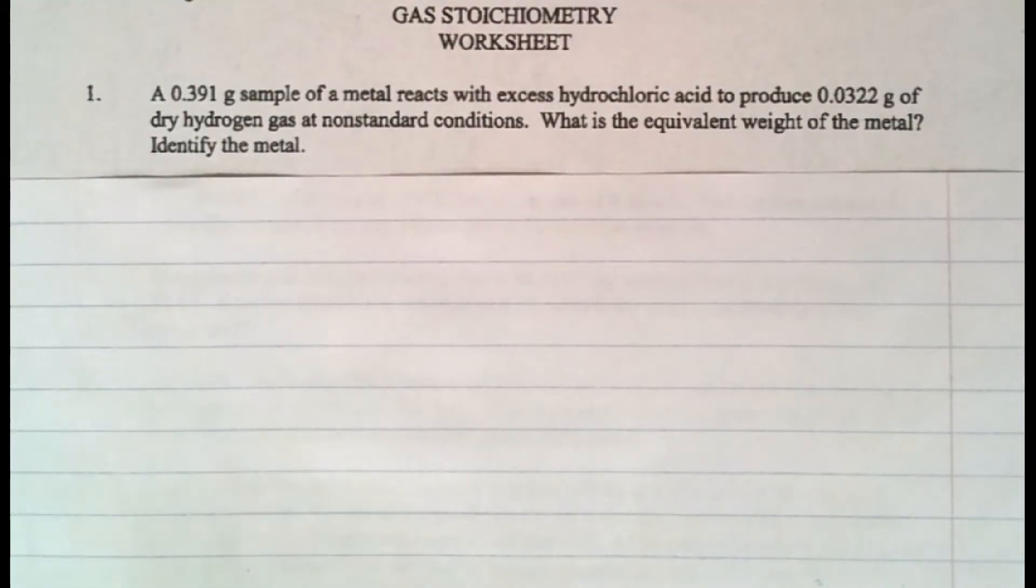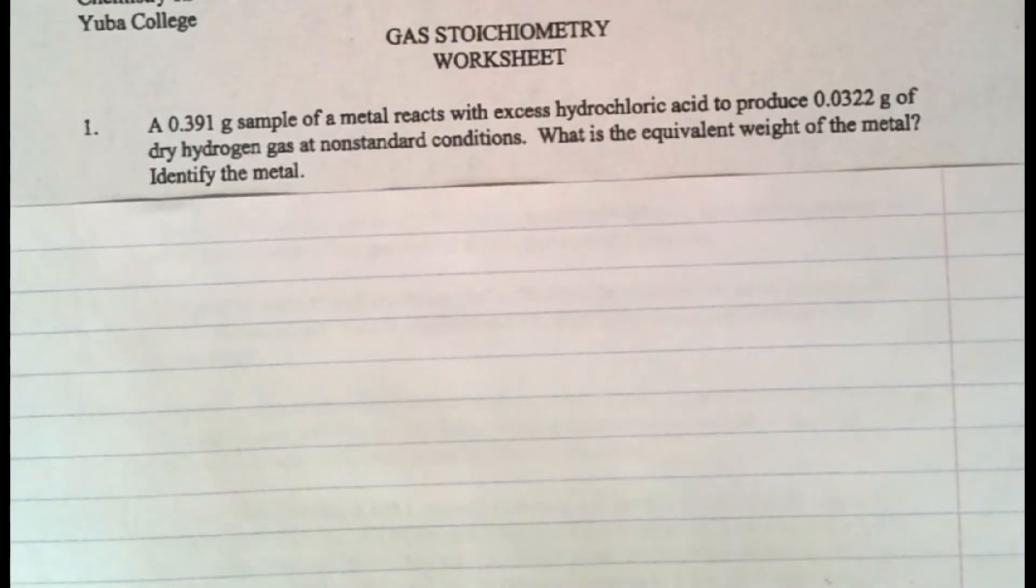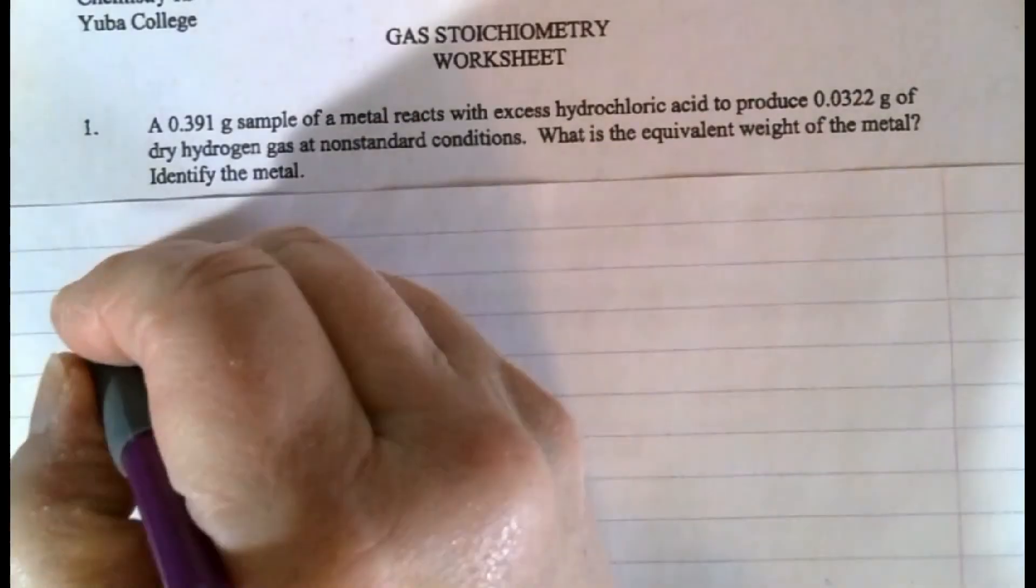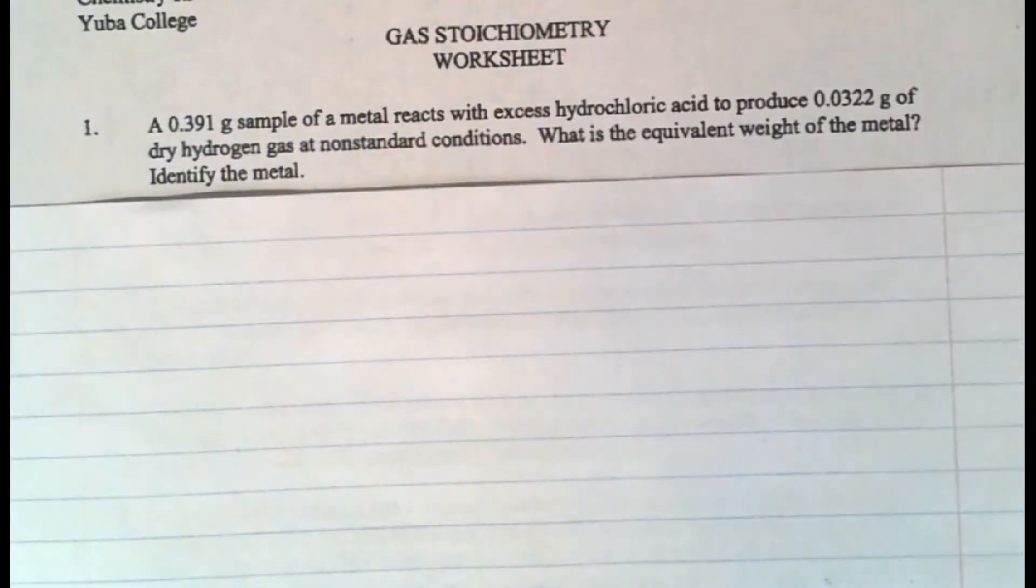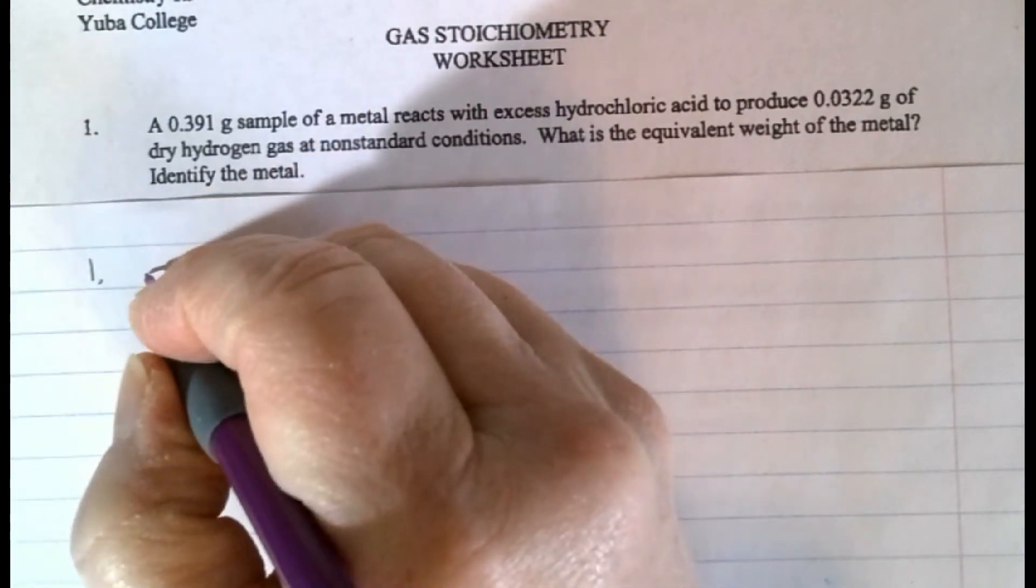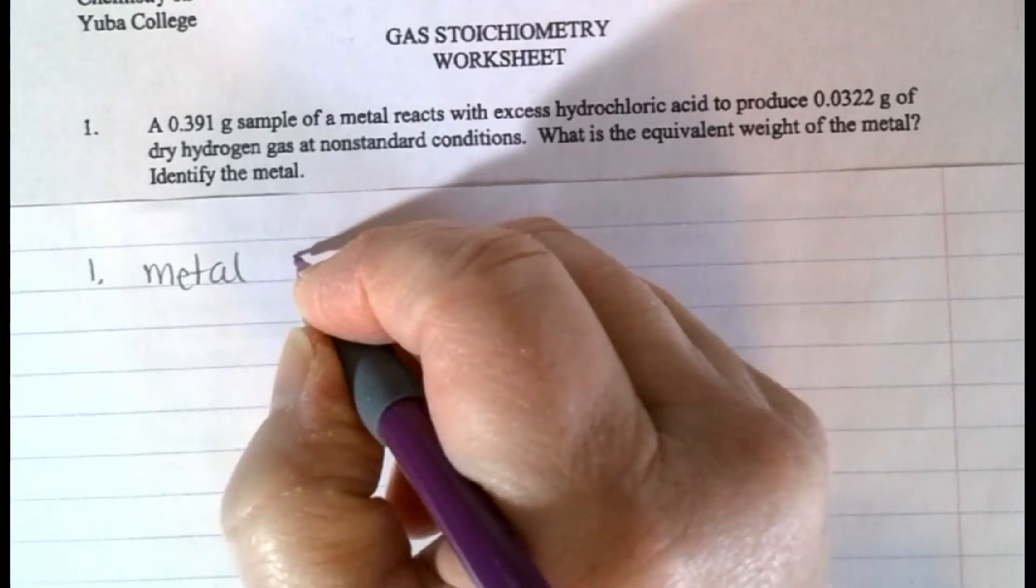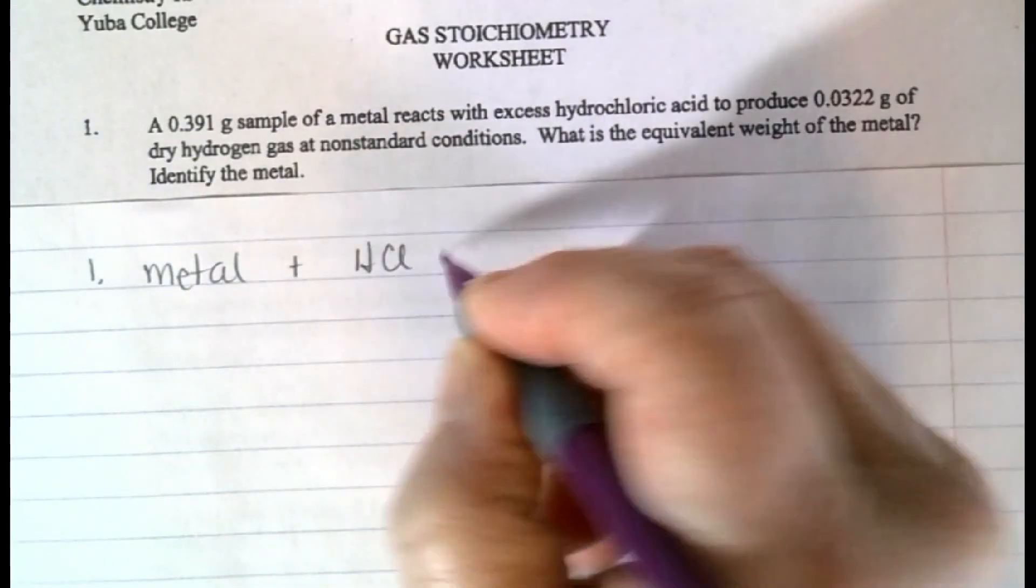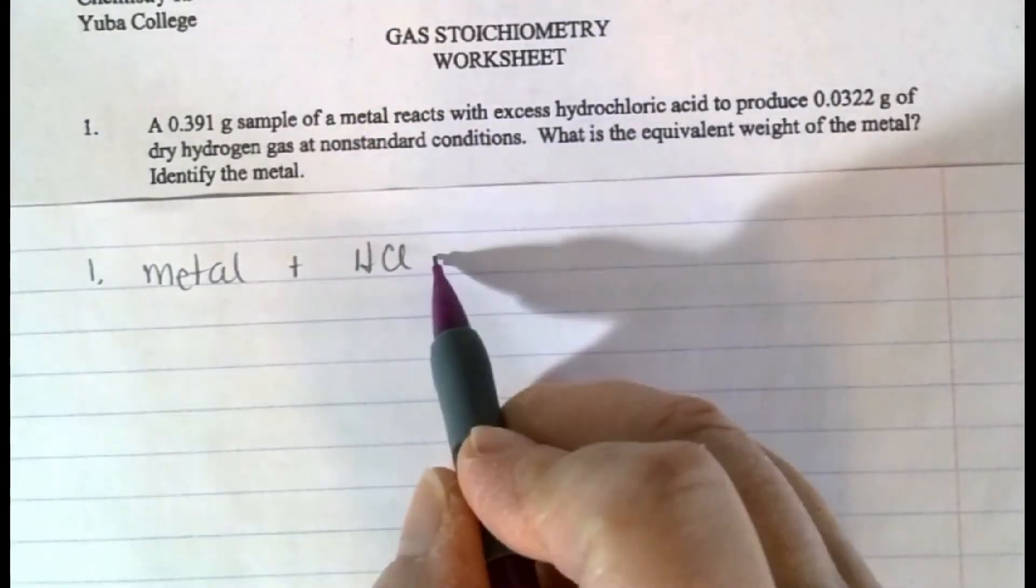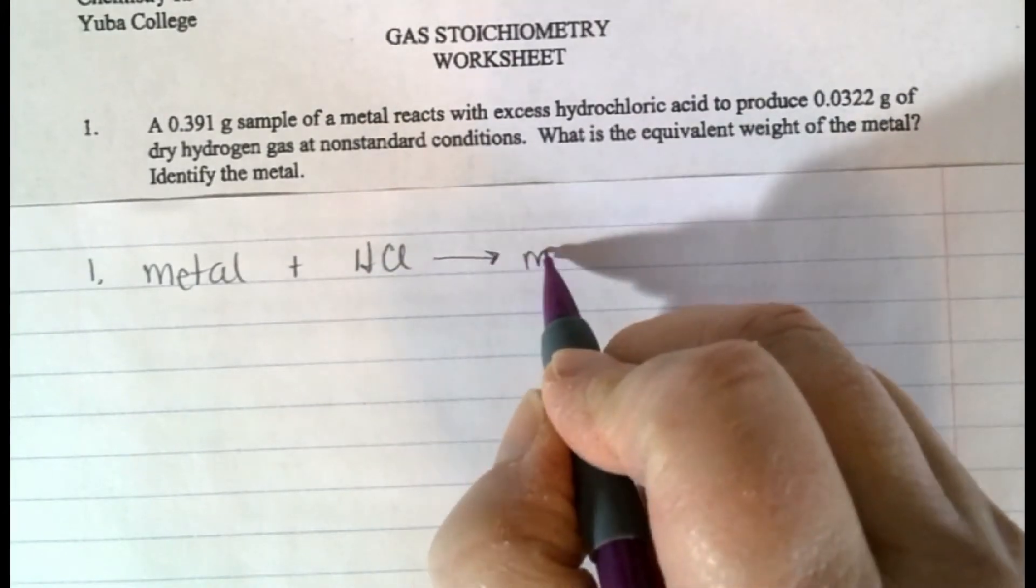Oh my goodness. So where do we start? Well, like with any good stoichiometry problem, you've got to start with a balanced equation. So looking at this, start with number one. I'm going to take a metal because I don't know what it is. I'm going to add a lot of hydrochloric acid to it because they say excess. And hydrochloric acid is relatively inexpensive. And I'm going to get a metal chloride.